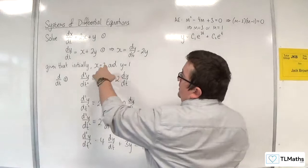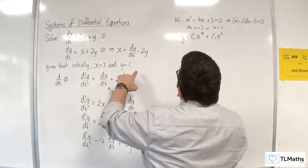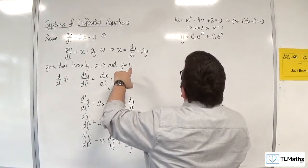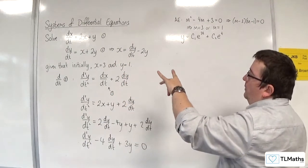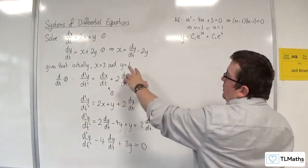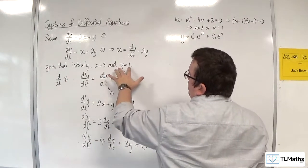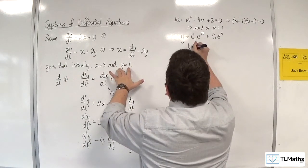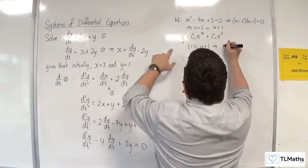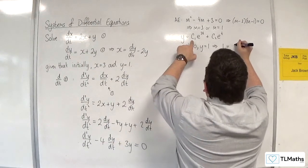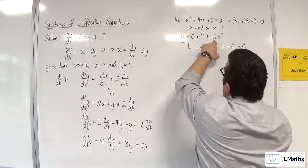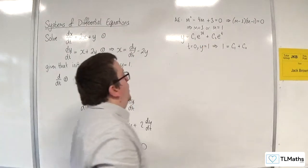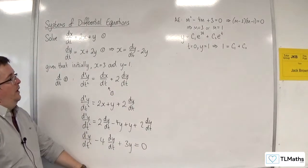Now I'm going to use my initial conditions here. Given that initially x equals 3 and y equals 1, when t is 0, y equals 1. So 1 is equal to c1 plus c2. So that sets up one equation there.